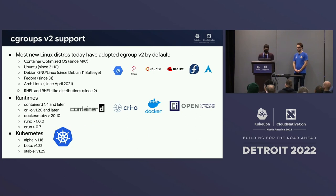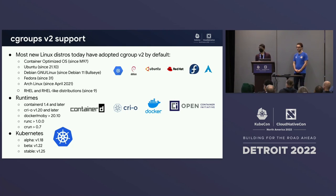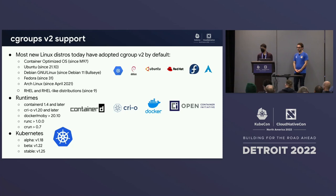All the popular distributions used with Kubernetes today, and all container runtimes — high-level ones like containerd, CRI-O, Docker, and lower-level ones like RunC and crun — have support for cgroups V2. In Kubernetes 1.25, we finally went GA with cgroups V2. Kubernetes supports it now.